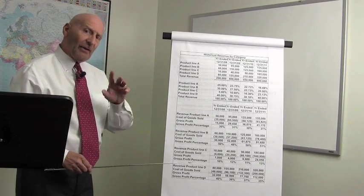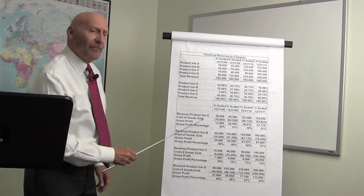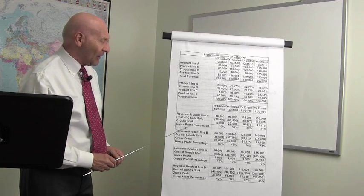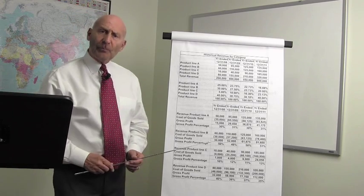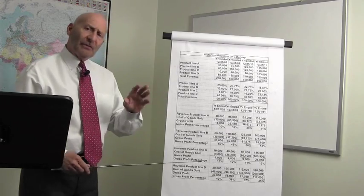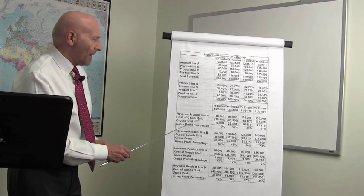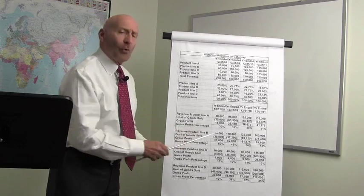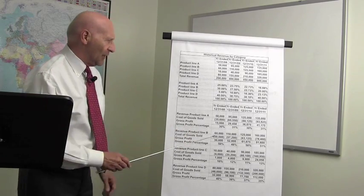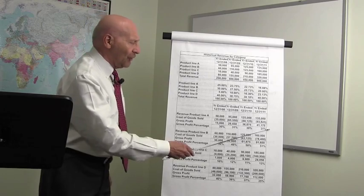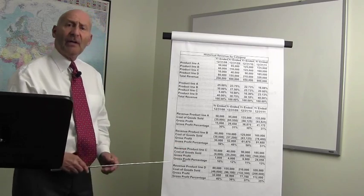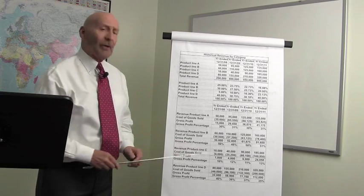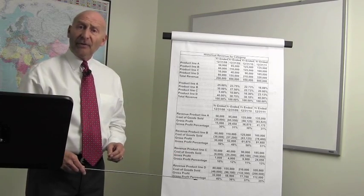Let's go on down and see how things change when we plug in the cost of goods sold for each product. We calculate, also, the gross profit percentage. This gives an entirely different picture. Product line A, even though from a percentage standpoint to the total revenue it is decreasing, it is contributing very nicely to the bottom line with a gross profit percentage of 30% and remaining relatively stable.